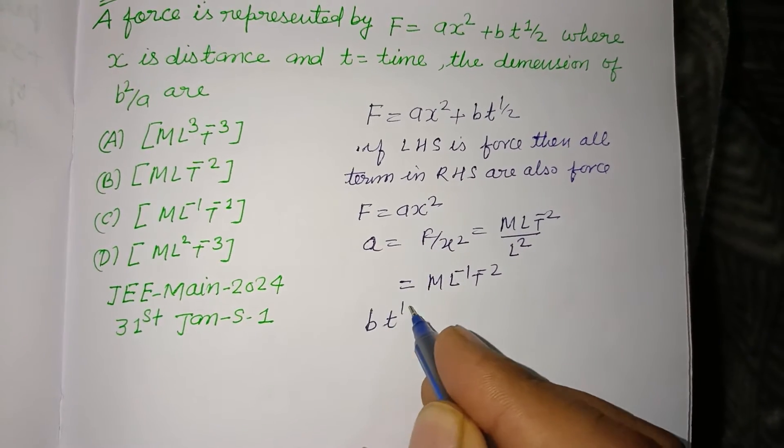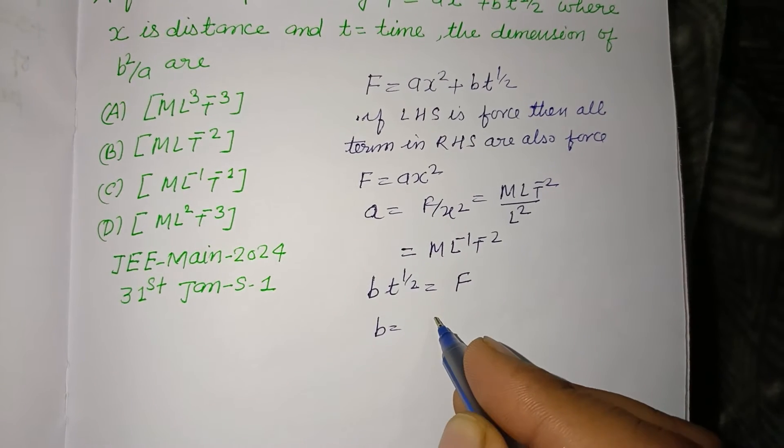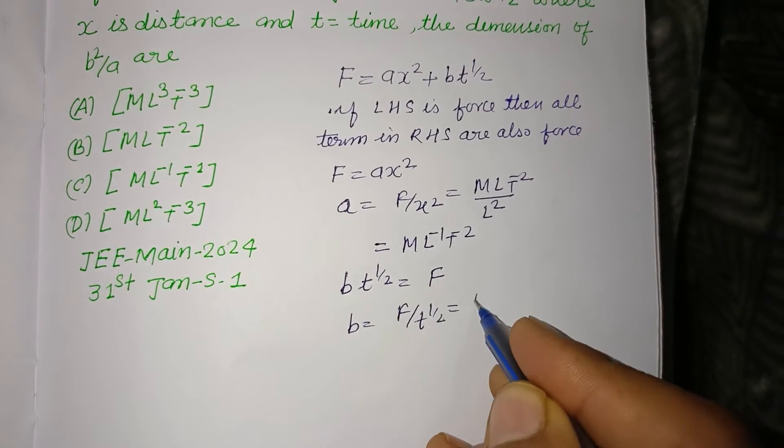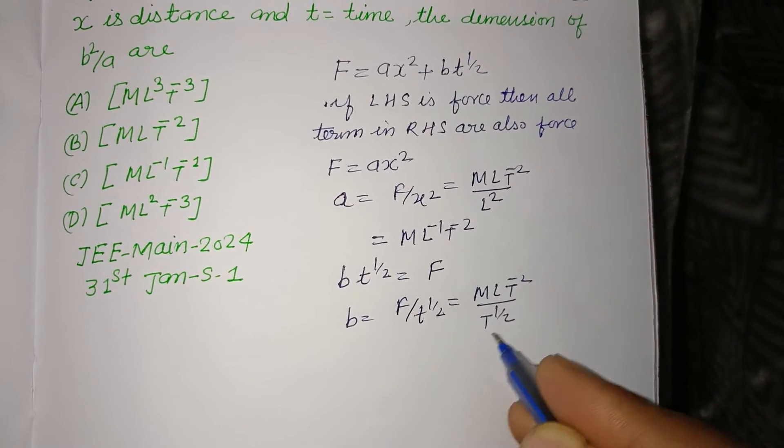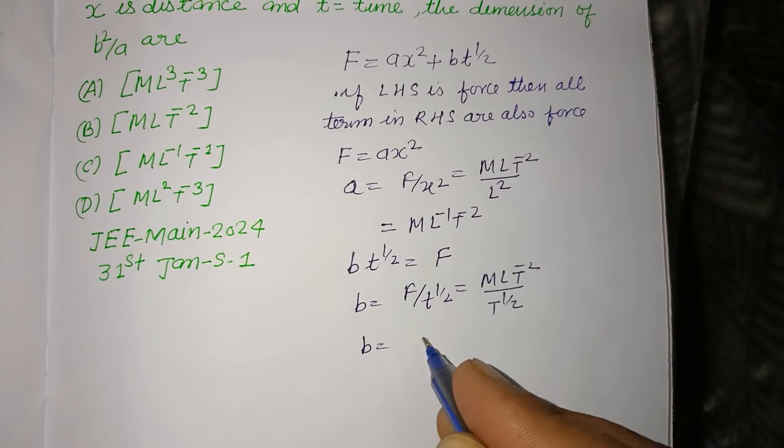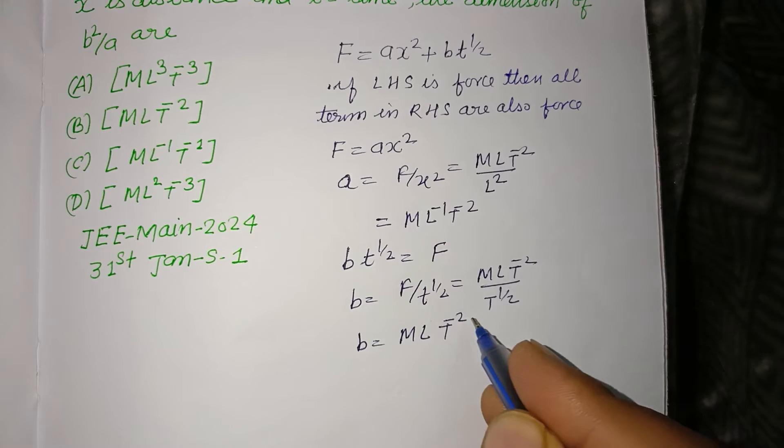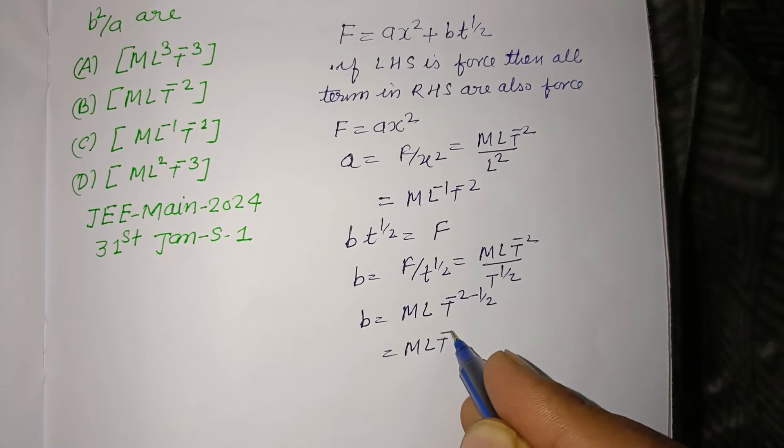And bt^(1/2) is also force, so b = F/t^(1/2). F is MLT^(-2) and t is T, so t^(1/2). Therefore, b = MLT^(-2-1/2), which is MLT^(-5/2).